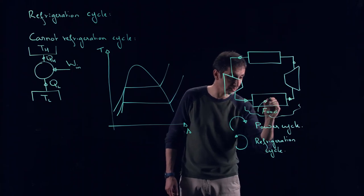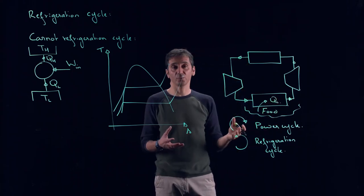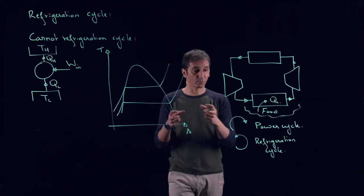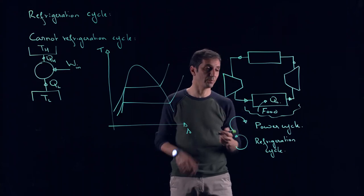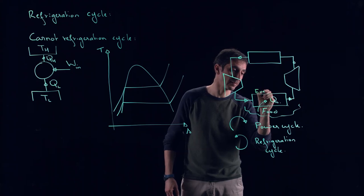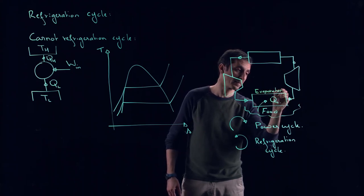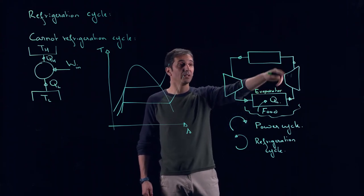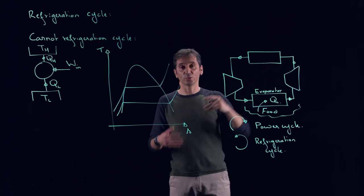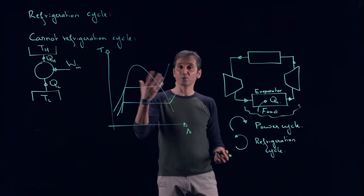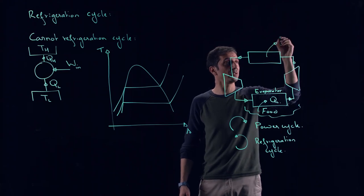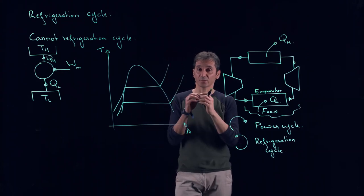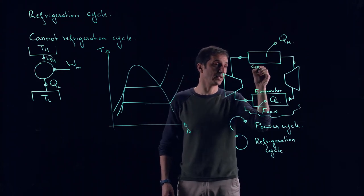And to do this, you take a substance that will evaporate. That will have to steal heat from your food to evaporate, and we call this an evaporator. Then you will have to provide work here, and then your refrigerant will go, typically, at the back of your fridge, and reject heat to the surroundings. This will be your QH, and to reject heat, your refrigerant has to condense, so we call this a condenser.